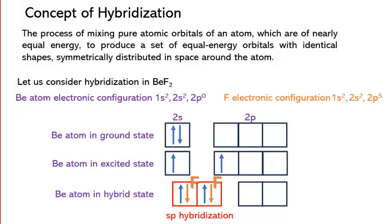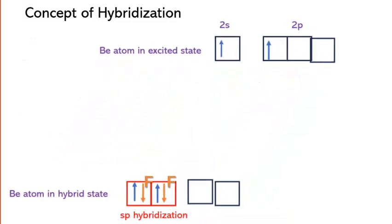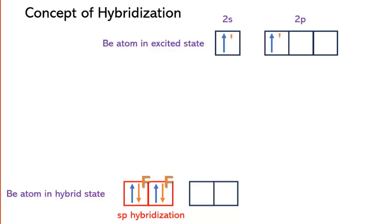Now, you might wonder, why do we need to hybridize the orbitals? Why can't we just overlap the atomic orbitals of two atoms directly? And why does this direct approach look inappropriate? The answer lies in the nature of the bonds formed.